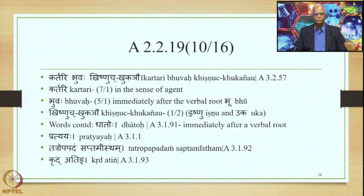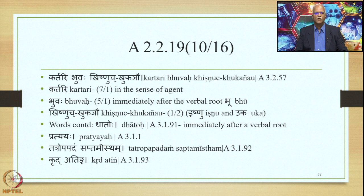Kartari is 7.1 meaning in the sense of the agent (Karta). Bhuvaha is 5.1 meaning immediately after the verbal root Bhu. Kheshnuch and Khokayao eventually yield the suffixes Ishnu and Uka respectively, since Kh, Ch, and Y are markers (Anubandhas) that are deleted. Words continued: Dhatoh from 3.1.91 (immediately after a verbal root), Pratyayaha 3.1.1. Also continued: Tatra Upapadam Saptami Stham from 3.1.92, Kridhating 3.1.93, and Adhyah Subhaga etc. 7.3 — meaning when these are the Upapadas — and Chviratheshu continues, meaning in the sense of the suffix Chvi (Abhuta Tadbhava), with Achvau meaning in the absence of the suffix Chvi.